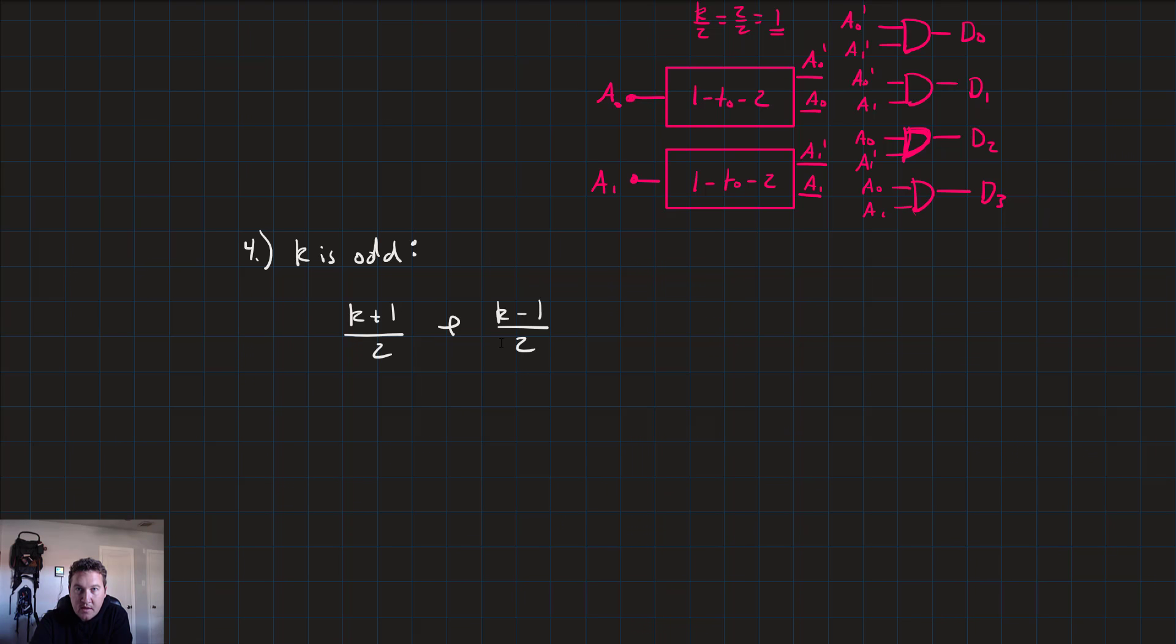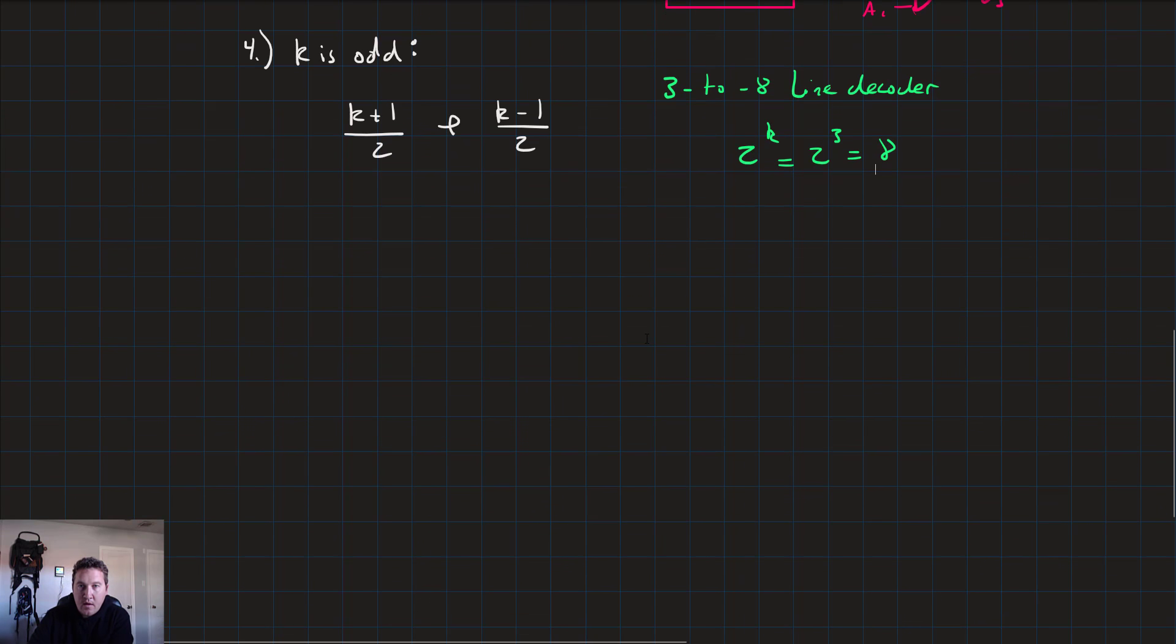So let's pretend that we were making a 3 to 8 line decoder. First things first, 2^k is 2^3 is 8. So we would have eight AND gates on the output. Two, three, four, five, six, seven, eight.